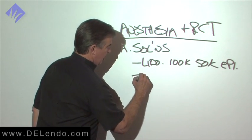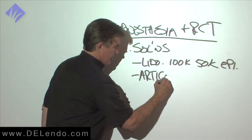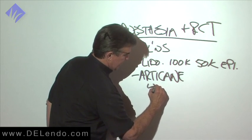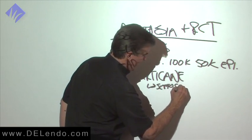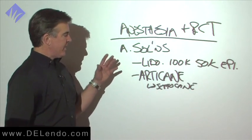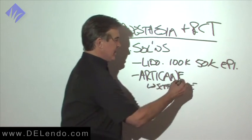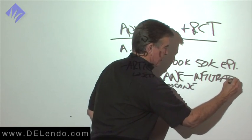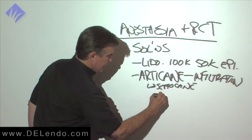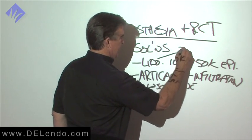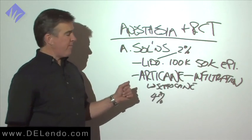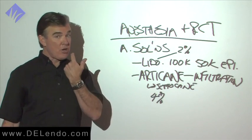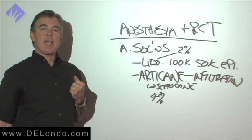We're going to use articaine. In the United States, the only company that sells this is Septodont, so it's called Septocaine. Been in Europe, Canada, the rest of the world for many years before it came to the United States. This is known for infiltration capabilities. It's a 4% solution, lidocaine is 2%, so you need to use half as much. If you use this for a block and you use our typical American lidocaine block, two carpules by the mandibular nerve, you could cause some damage to it.